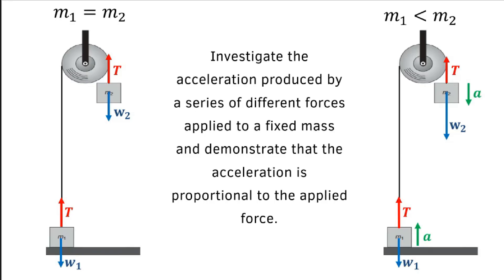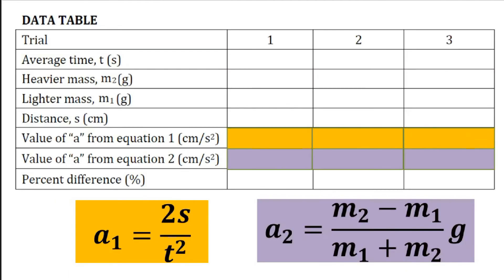The objective of this experiment is to investigate the acceleration produced by a series of forces applied to a fixed mass, and demonstrate that the acceleration is proportional to the applied force. You have to complete the data table with: average time T, the heavier mass M2, the lighter mass M1, and the distance S. Please check your lab report — the heavier mass should be labeled M2, the lighter mass M1. The unit of M2 should be in grams, and the unit of distance S is in centimeters.